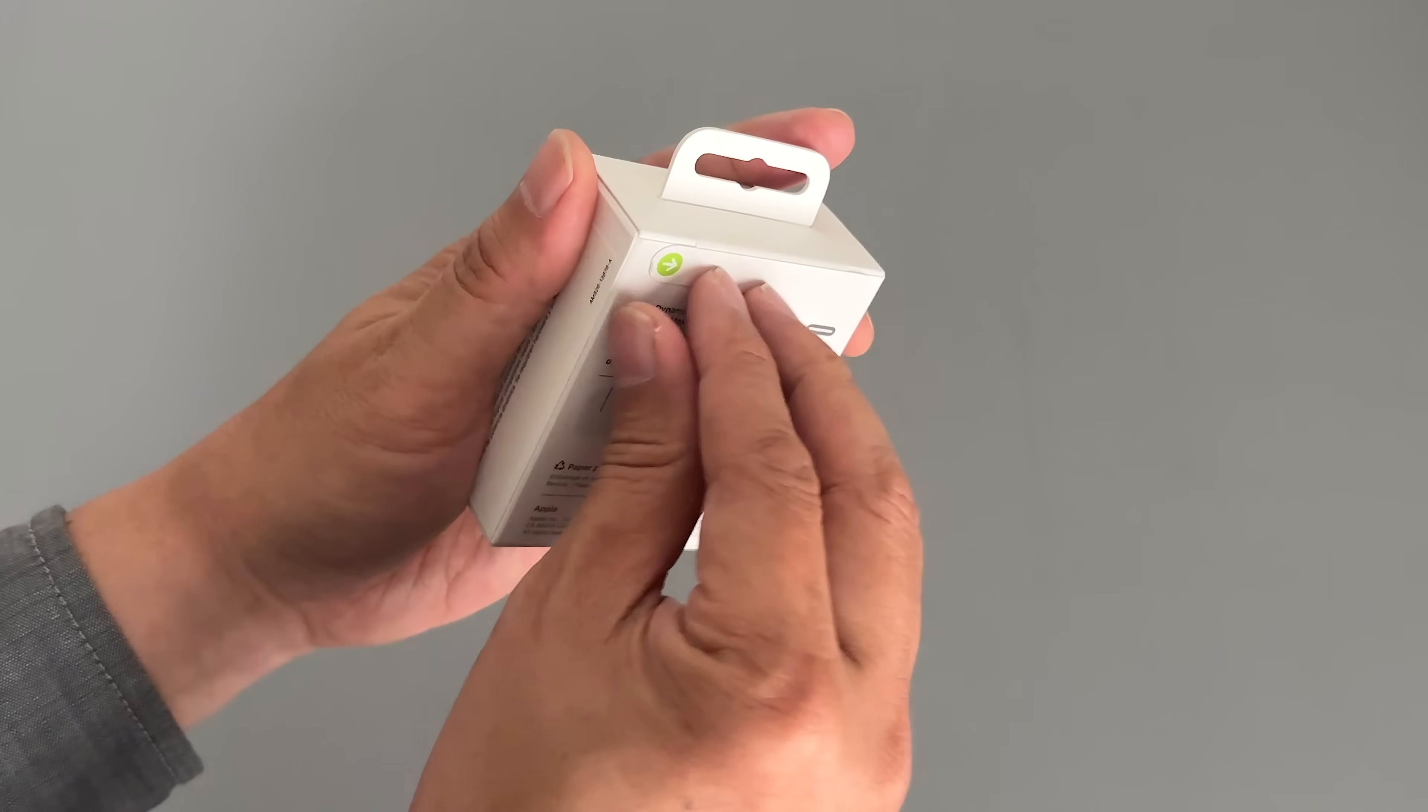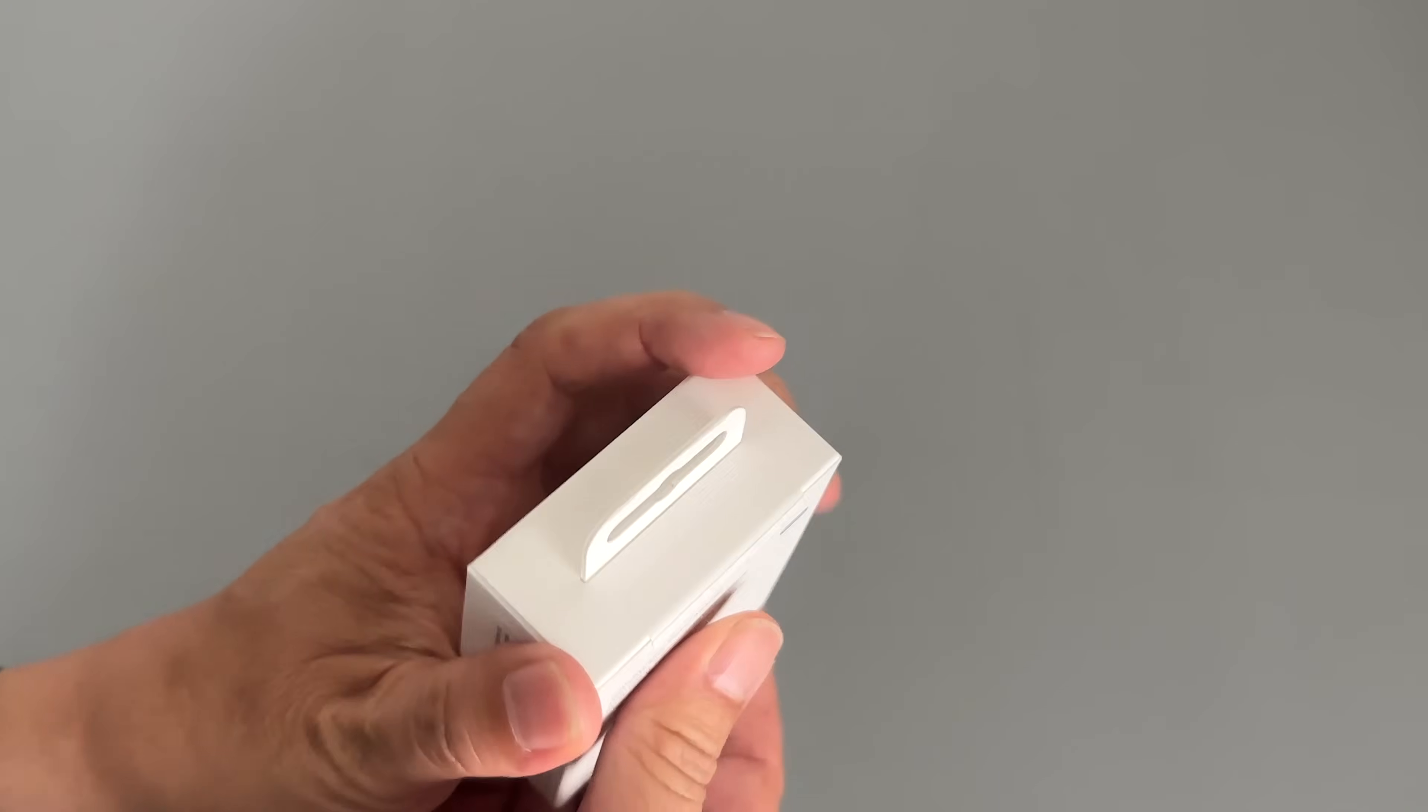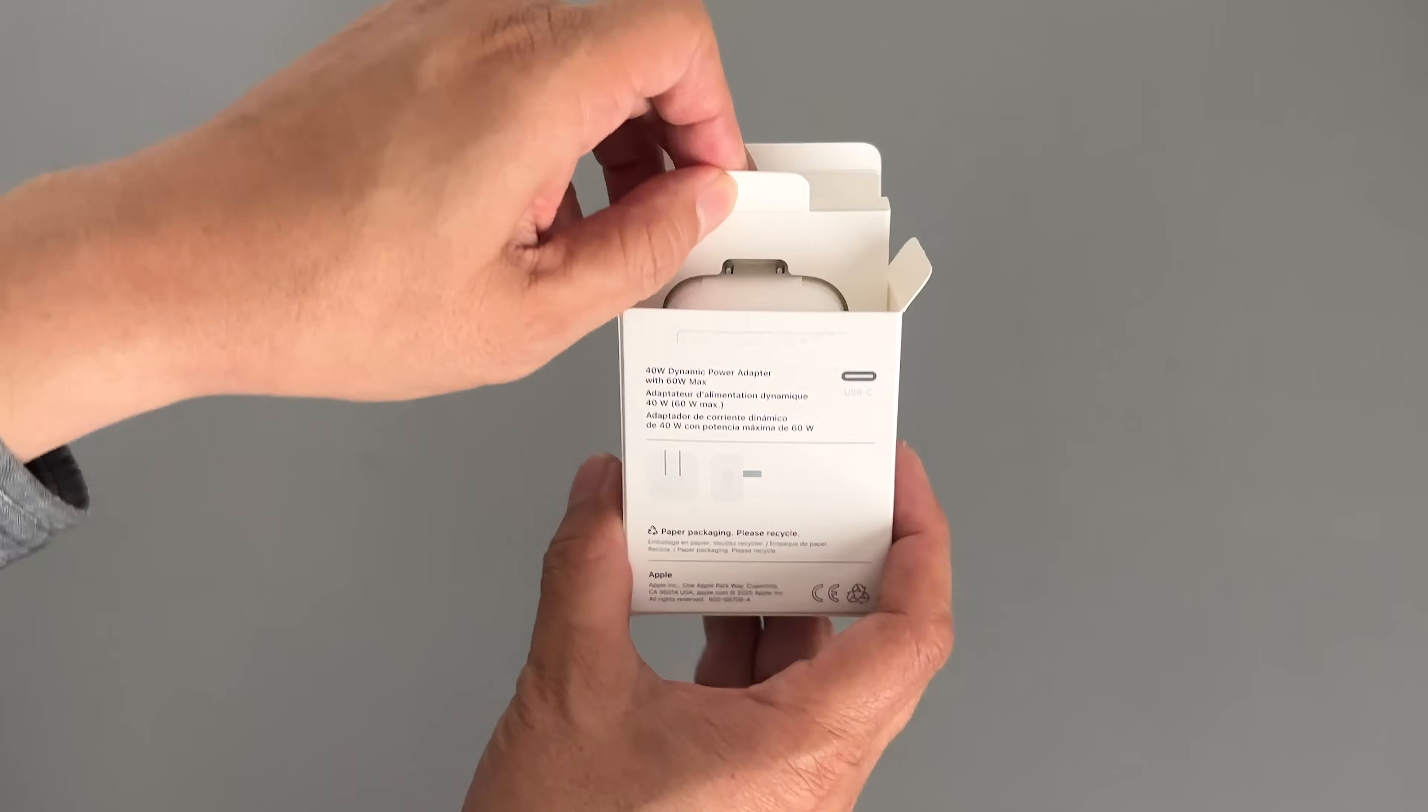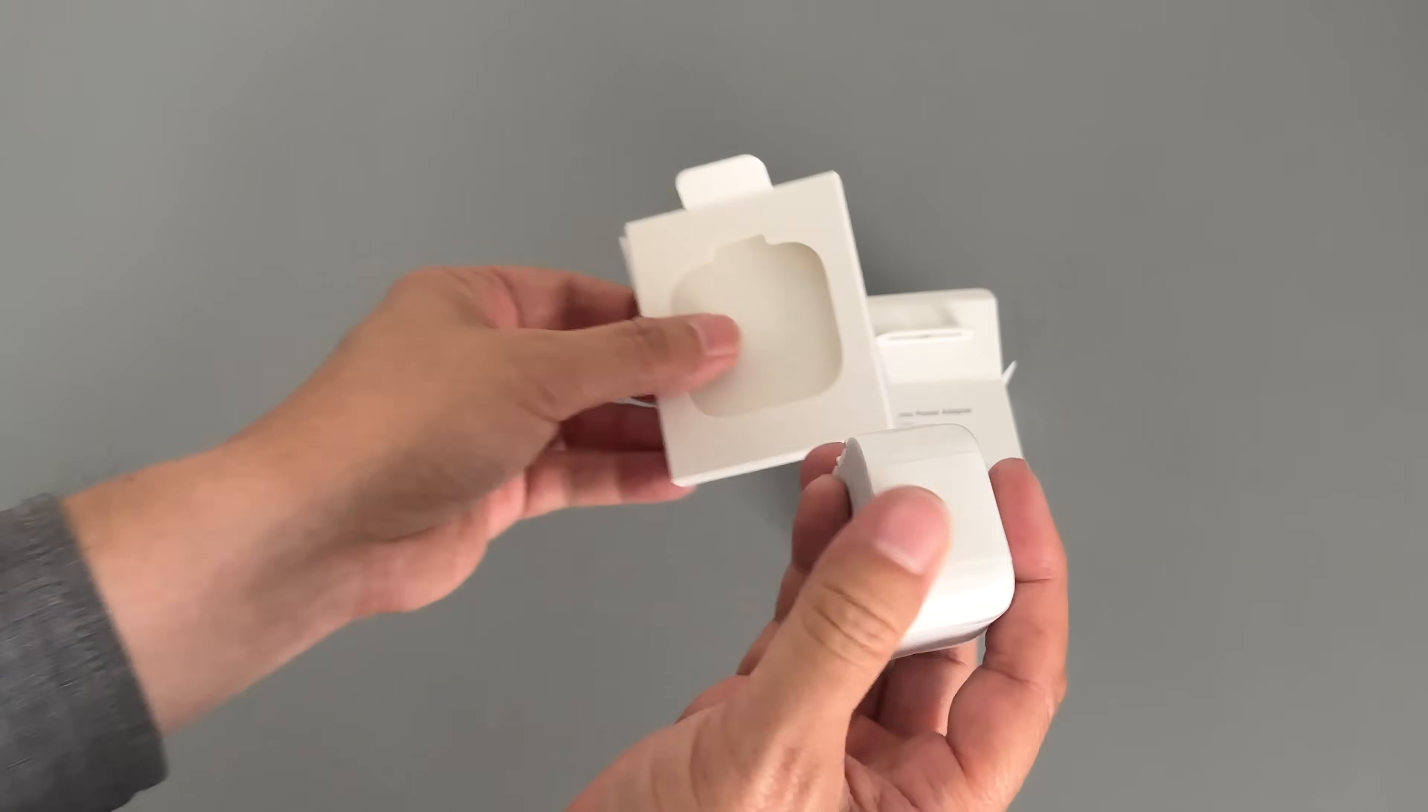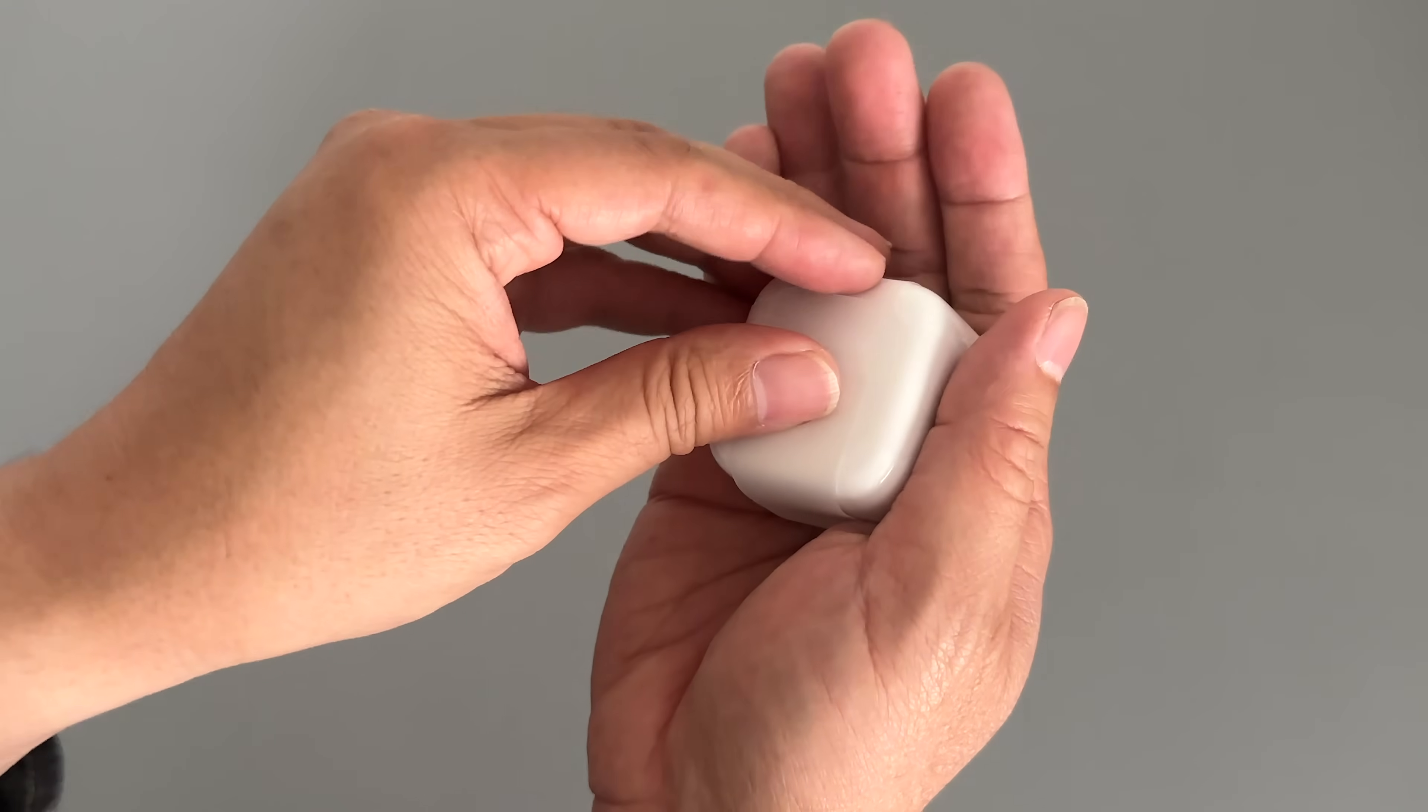Apple always has great packaging. You see the little arrow there with the tab. You just peel off the tab, and once you do that you can open the box and it opens the seal. This is the box it comes in, here's the unit, and you get some paperwork with it as well. Really nice compact unit. This would probably be really good for travel.